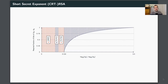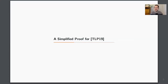The proof for our new attack consists of two steps. In the first step, we take another look at the TLP19 result and give a new proof for it. The advantage of our new proof is that it provides much more intuition than the original proof. Then we use this intuition to generalize the TLP19 result, and with this generalization we obtain our partial key exposure attack.